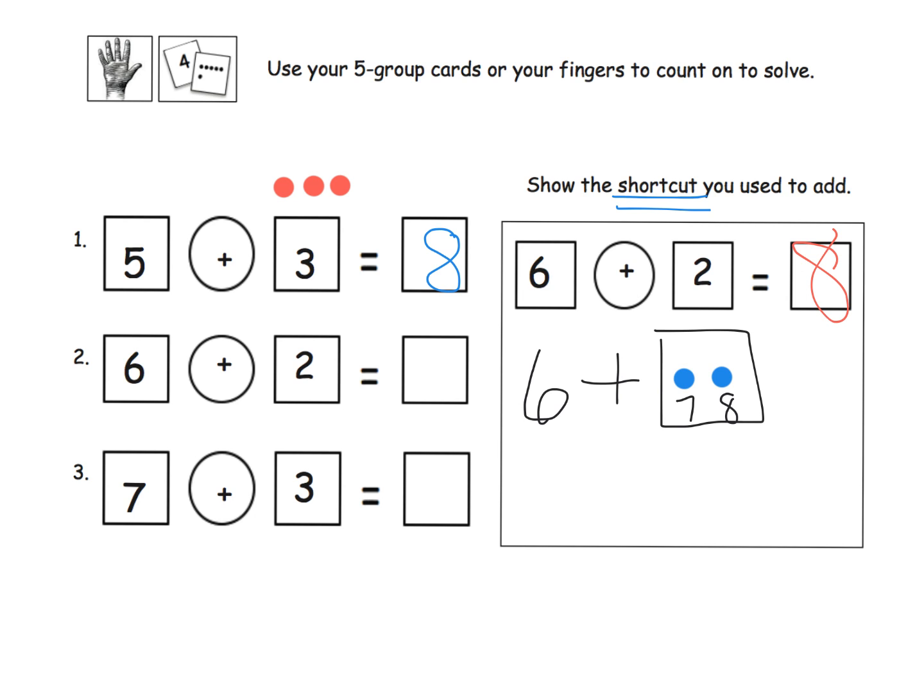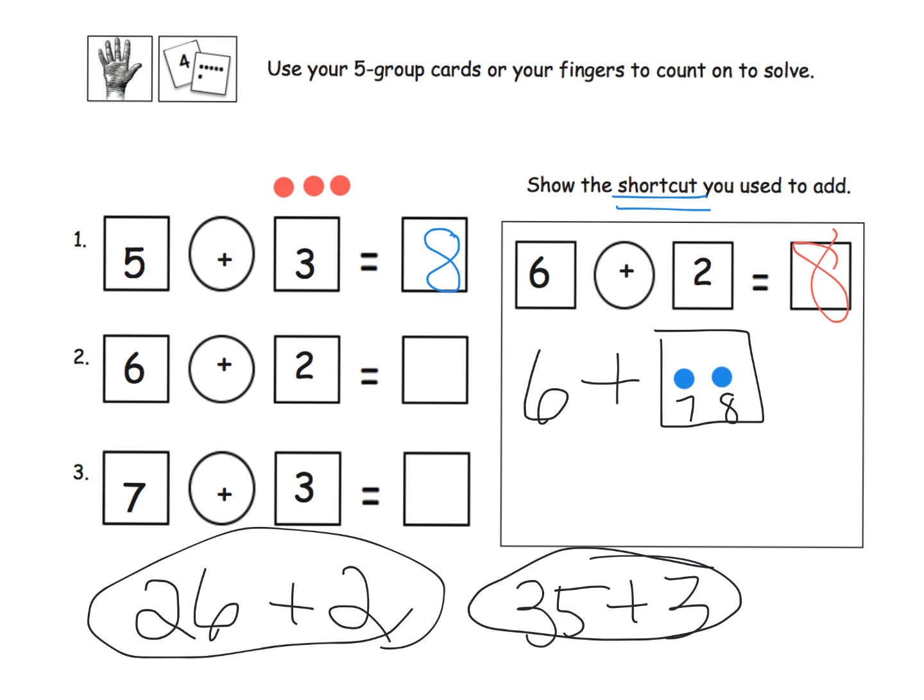If we want to differentiate on the other end, really students who are finding this super duper easy, for the students who are ready, well maybe instead of saying six plus two you can differentiate by making this a 26 plus two, and then let students count on. And then you know, 35 plus three, so you can definitely differentiate pretty quickly on that end.